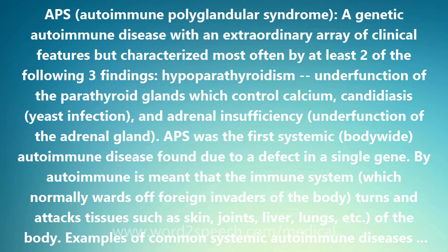The child with APS develops problems in numerous glands, polyglandular, including hypoparathyroidism, hypogonadism with sex gland failure, adrenal insufficiency, type 1 insulin-dependent diabetes with insufficient insulin production by the pancreas gland, and latent hypothyroidism, under function of the thyroid gland.